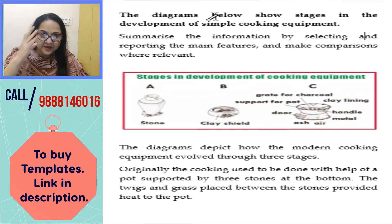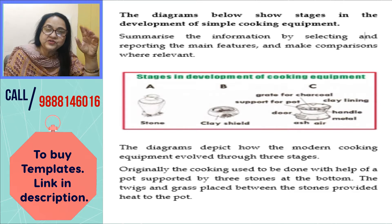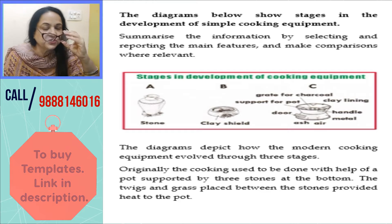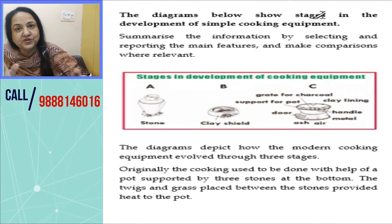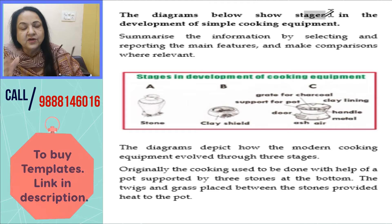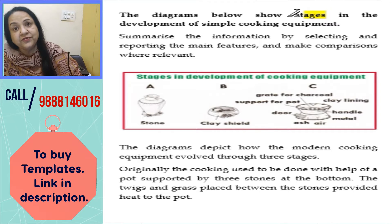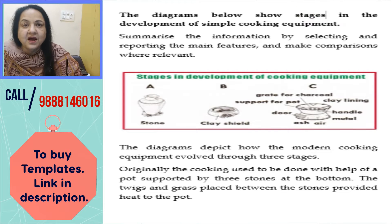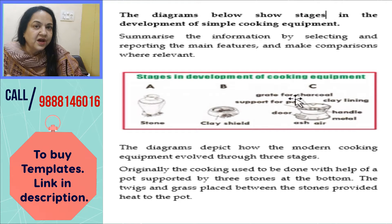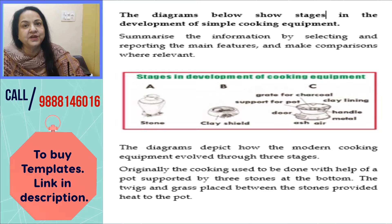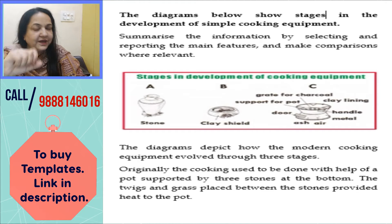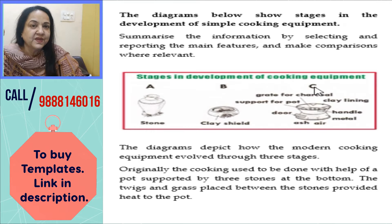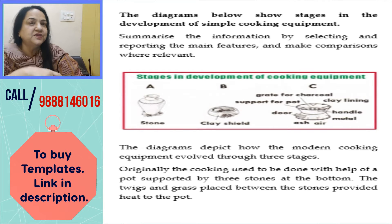Now you can see on your screen that it is a diagram. This diagram will show you stages — there can be stages A, B, C, D, E, F — any number of stages can be there. Don't get confused. You have to look very carefully at the stages and then try to connect them. This is all about the connectivity of stages.